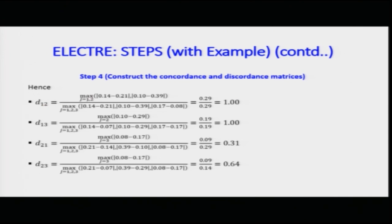D_12 is found by comparing the first and second values, finding the maximum score in the numerator — the denominator value comes out as 1, meaning the maximum ratio is 1. Similarly D_13 is 1. The values D_12 and D_13 are the comparisons along the rows and columns at each step.